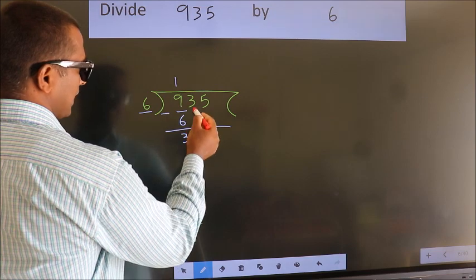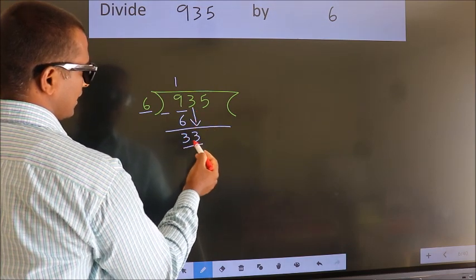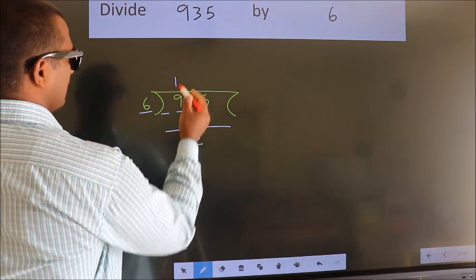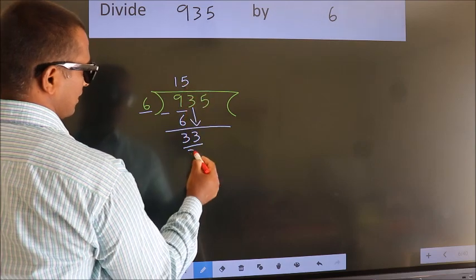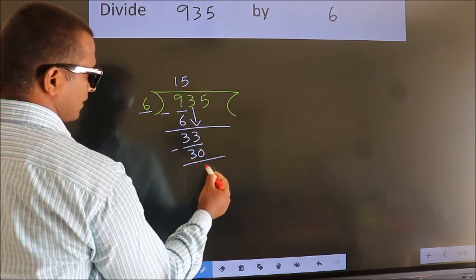After this, bring down the beside number. So 3 down, so 33. A number close to 33 in 6 table is 6 fives 30. Now we subtract. We get 3.